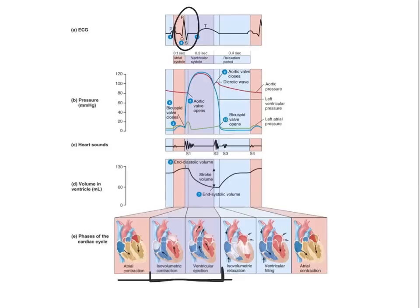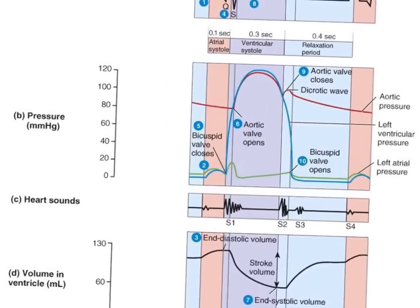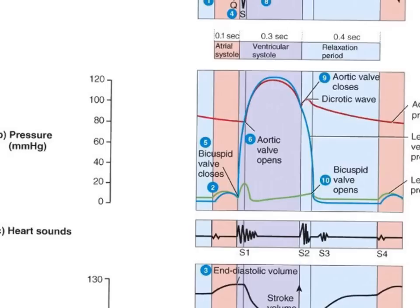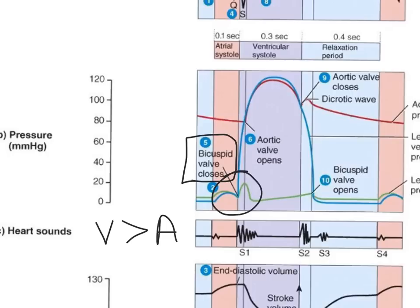Let's continue on, looking at what happens as the ventricle continues to contract. Taking a closer look at the pressure waves — remembering that whenever the two waves cross, there's either going to be opening or closing of a valve. Right here, the ventricular pressure now exceeds the atrial pressure. That means the AV valve is going to close, and because we're talking about the left side of the heart, we're talking about the bicuspid valve. The bicuspid valve closes, and the first heart sound, S1, is heard due to the closing of that valve.